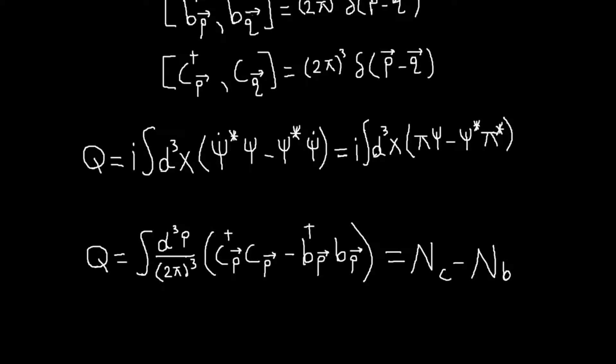And this is interesting because this is two terms here where each one is basically the number operator for the respective particles. So the conserved charge is the number of C particles minus the number of B particles.